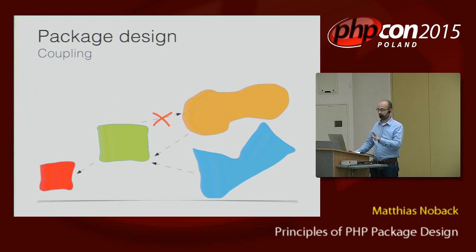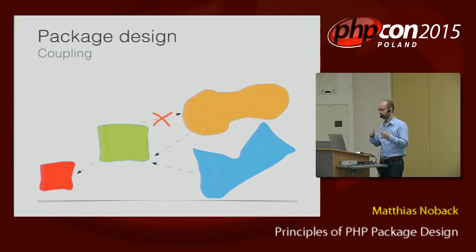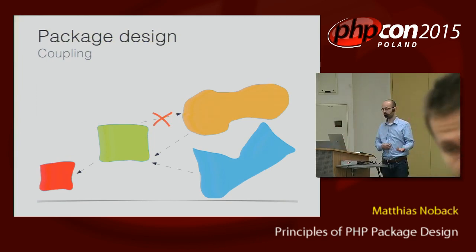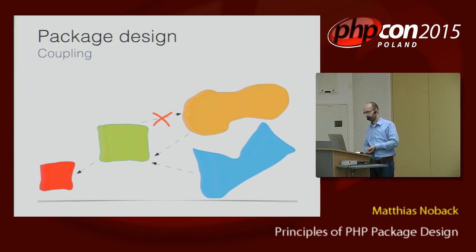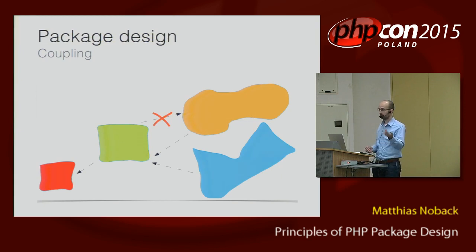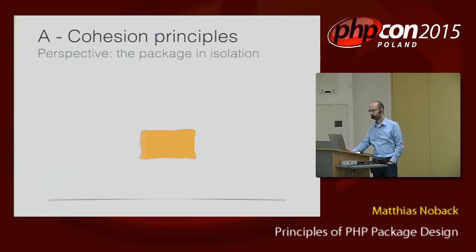Then there are three other design principles which are about package coupling. Coupling is about not what's inside a package, but what is needed by other packages — it's about the relation of one package with its environment. Does the green package need some other packages? Yes, it needs the orange package and the red package. But it turns out, in this image, that there is a cycle in the dependency — the green one needs the orange one and the orange one needs the green one, so there is something wrong there and this is not allowed. Let's get to the cohesion principles first.